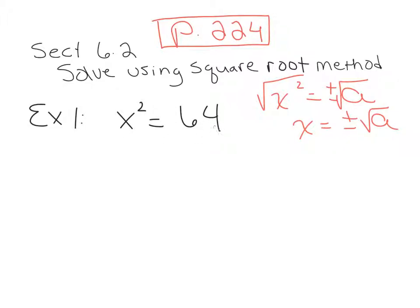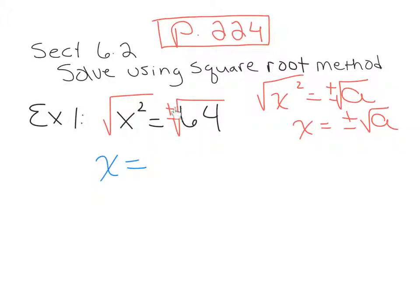If x squared equals 64, we can get rid of this square by using a square root. We have to do the same thing to both sides. When you put the square root on a number that does not have the exponent, it generates a plus-minus symbol, meaning there are two possibilities. The exponent and the radical cancel each other, giving us x. The square root of 64 is 8, but it could be positive 8 or negative 8, written as ±8.